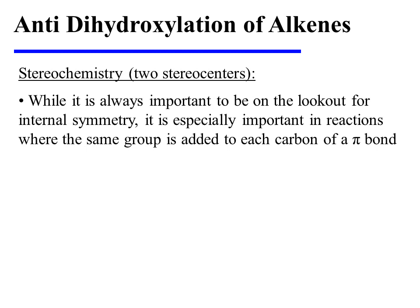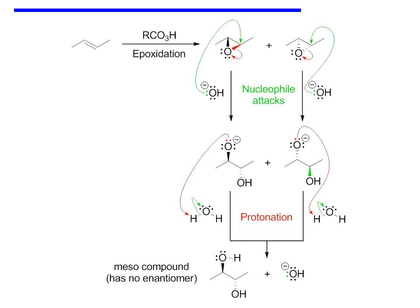It is always important to be on the lookout for internal symmetry, but it is especially important to do so in reactions where the same group is added to each carbon of a pi bond. To highlight this point, let's consider the anti-dihydroxylation of trans-2-butene. If this alkene substrate is treated with a peroxy acid, two enantiomeric epoxides are formed. These epoxides may be opened in aqueous base. Since both carbons of the epoxide have the same level of substitution — in other words, they are both secondary — attack of hydroxide may occur at either center.